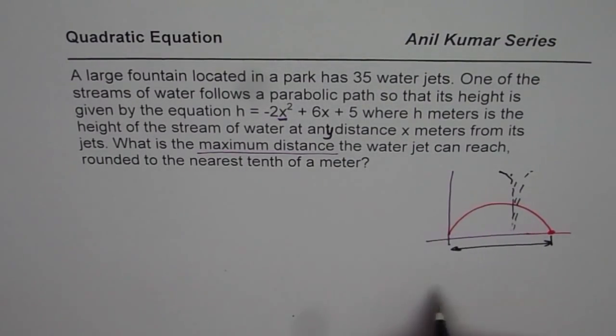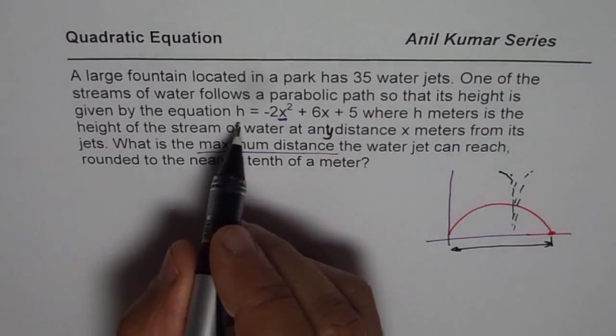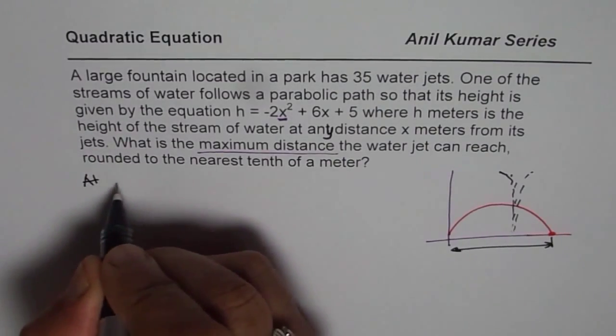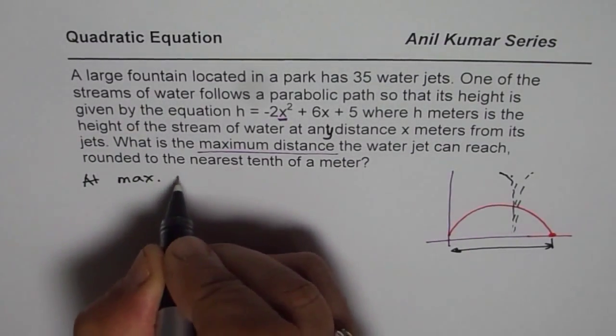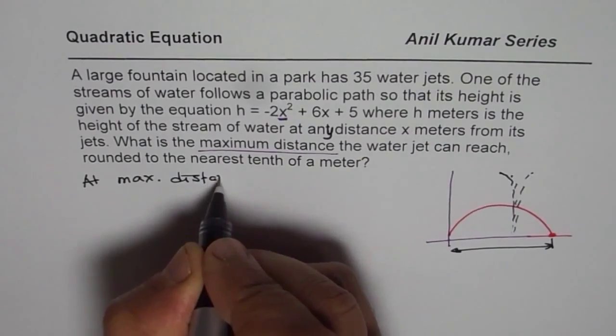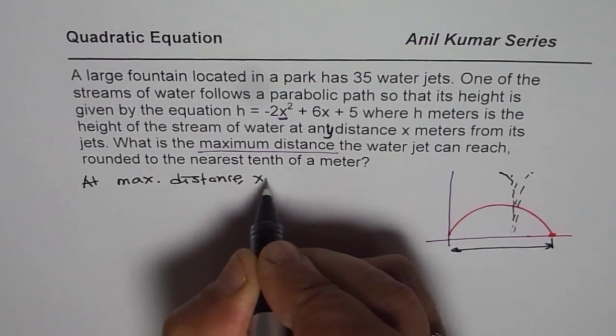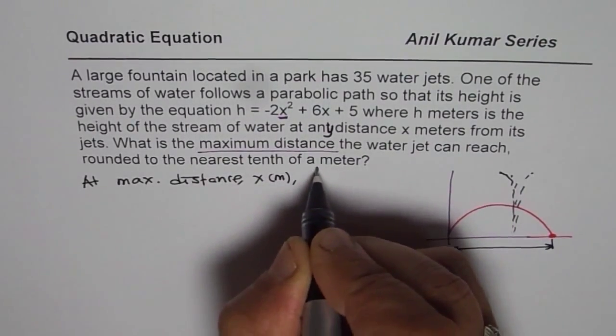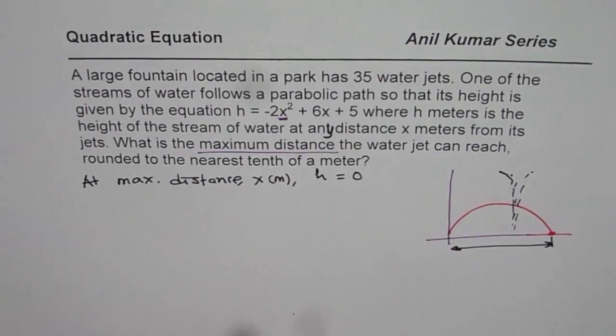So at that point, height will be 0. Therefore at maximum distance, which I am saying x in meters, height equals 0, right?